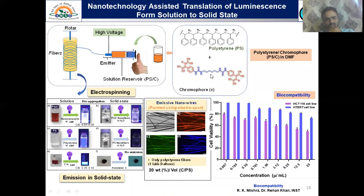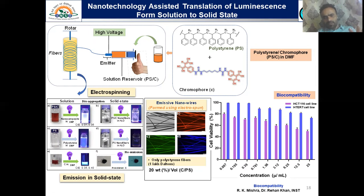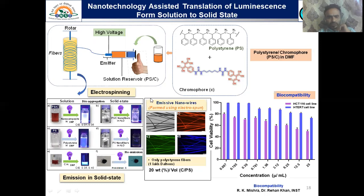The main objective was to translate the emission from solution to solid state. We took the help of nanotechnology and used an electrospinning technique to make fibers using polystyrene polymer. In polystyrene, the molecular flexibility of the molecule would remain intact — the molecules would not undergo aggregation that would quench emission. We observed that these fibers in water showed emission, unlike the pure compound in solid state. These are optical microscopic images of the fibers, which showed all colors — red, green, and blue emission.